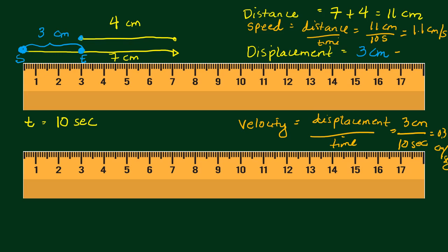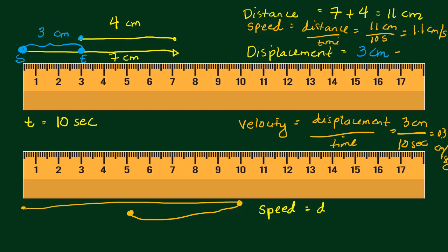Another example — suppose an ant walked from the starting point at 0, all the way up to 10, and then went back to 5 centimeters. It moved 10 centimeters to the right, and then 5 centimeters to the left. So its end point is at 5. Suppose the time here, it took 5 seconds.